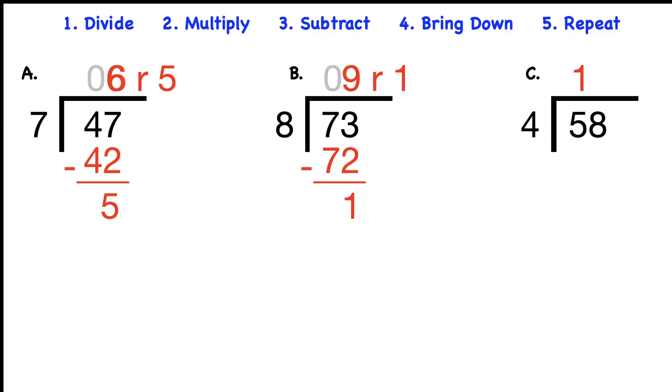58 divided by four. Four does go into five one time. One times four is four. Five minus four is one. Bring down the eight. How many times does four go into 18? It goes four times. Four times four is 16. If we subtract, we get two. Our answer is 14 with a remainder of two.